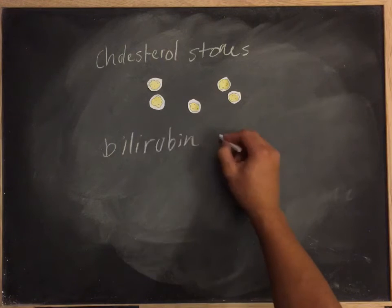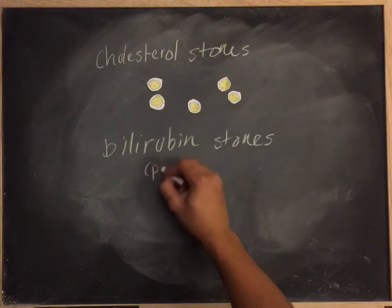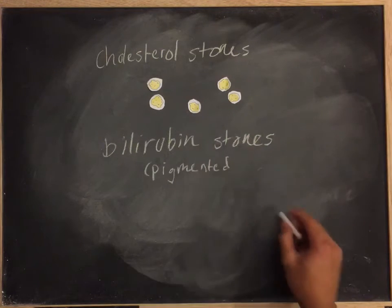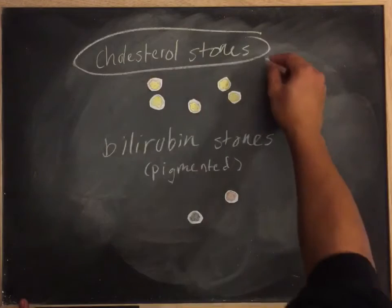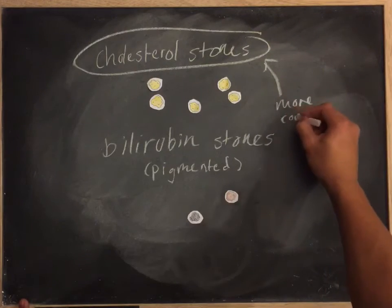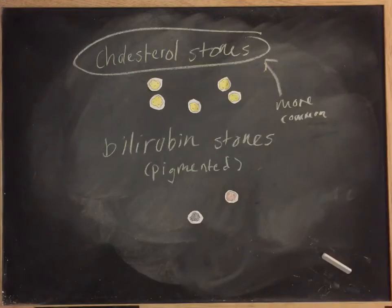Gallstones are essentially hard particles that usually develop in the gallbladder where bile is stored. And there are two types: cholesterol stones which are usually yellowish in color, and bilirubin stones which are pigmented and either come in black or brownish colors.